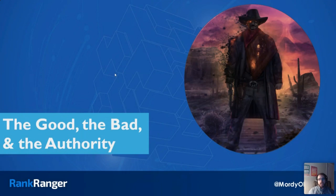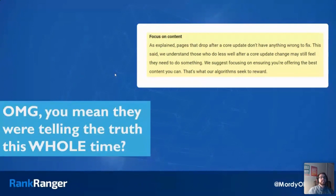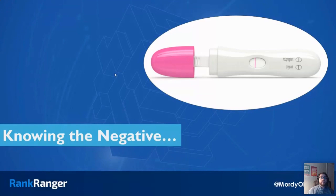Now we can start looking at what good, authoritative content looks like. When Google has talked about core updates, they've said the only thing you can do — where your content is relevant and good — is continue to write authoritative content. The question is, what does writing authoritative content actually mean now that Google is so good at understanding authority? Writing authoritative content now versus five years ago are not the same thing.